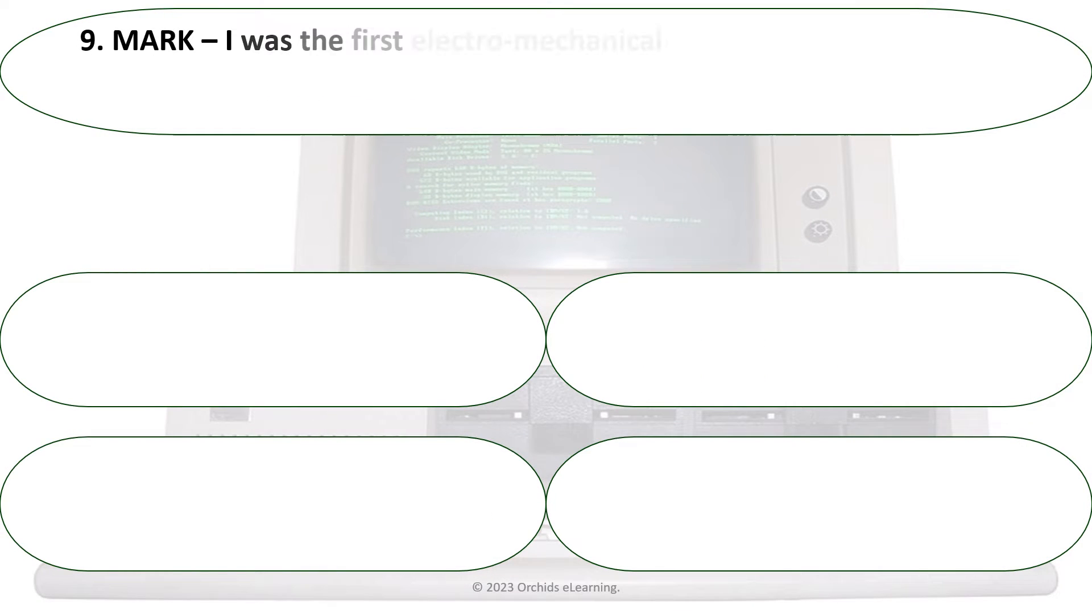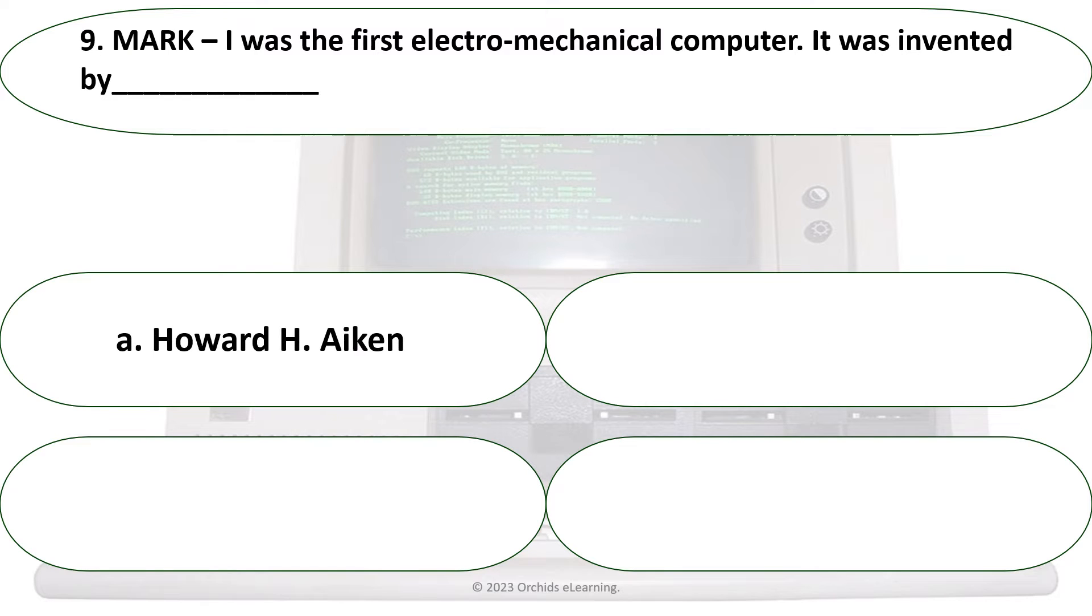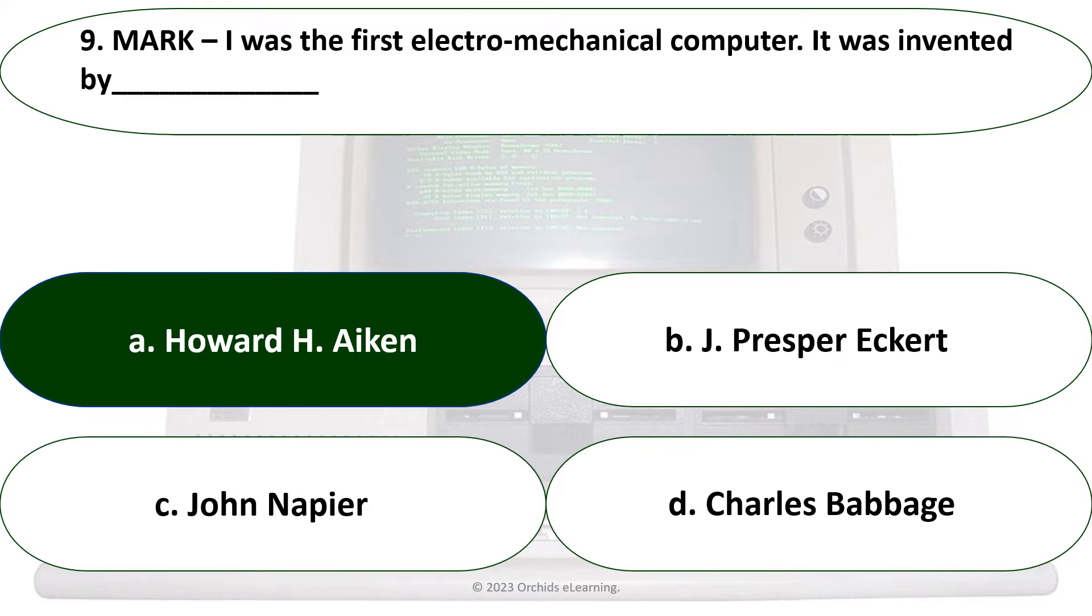Mark I was the first electromechanical computer. It was invented by: A. Howard Aiken